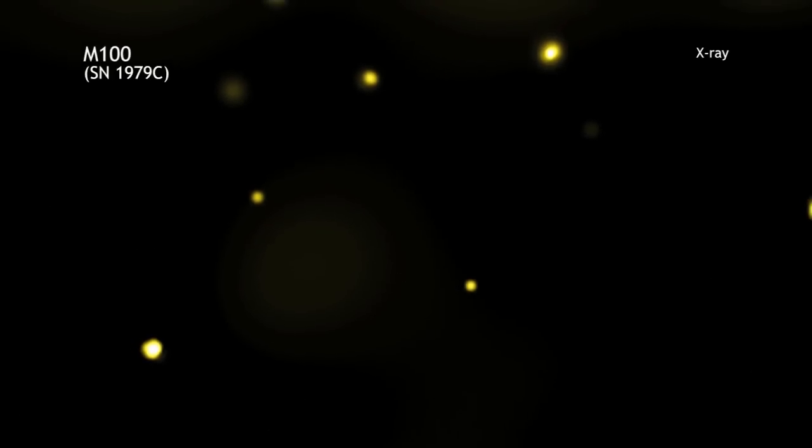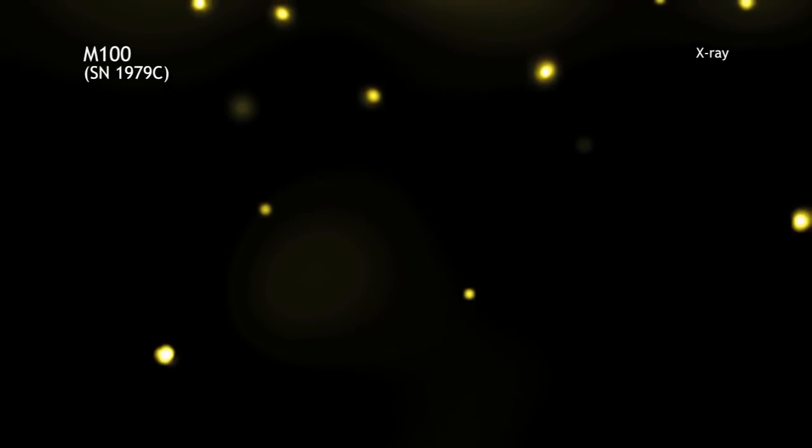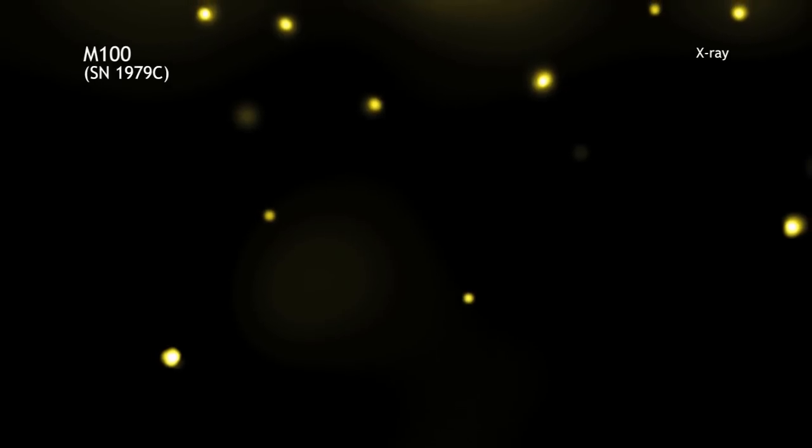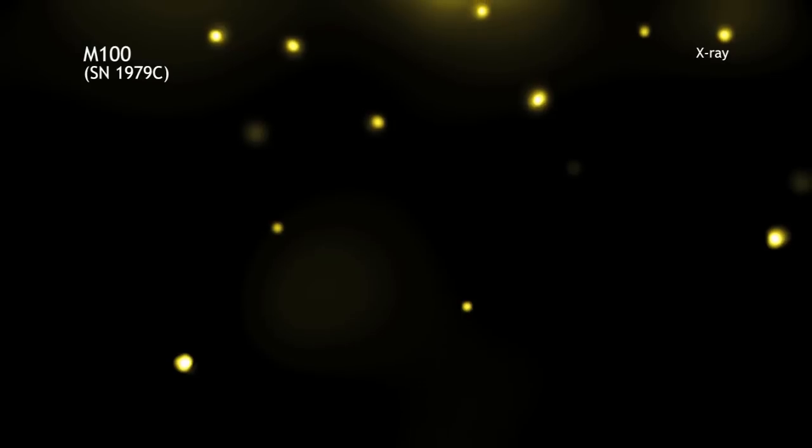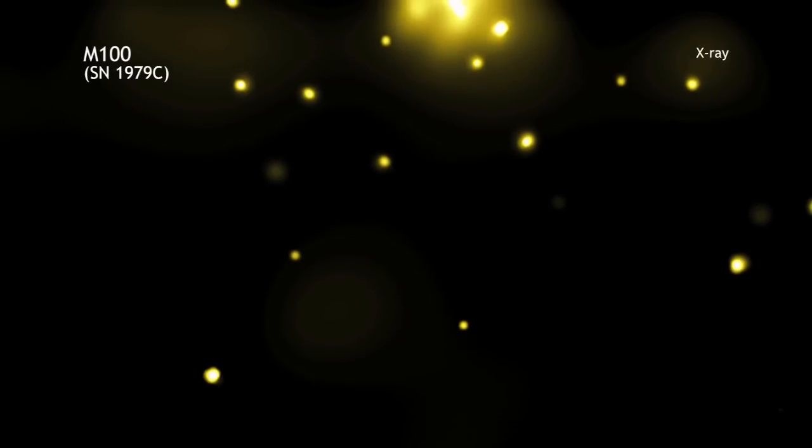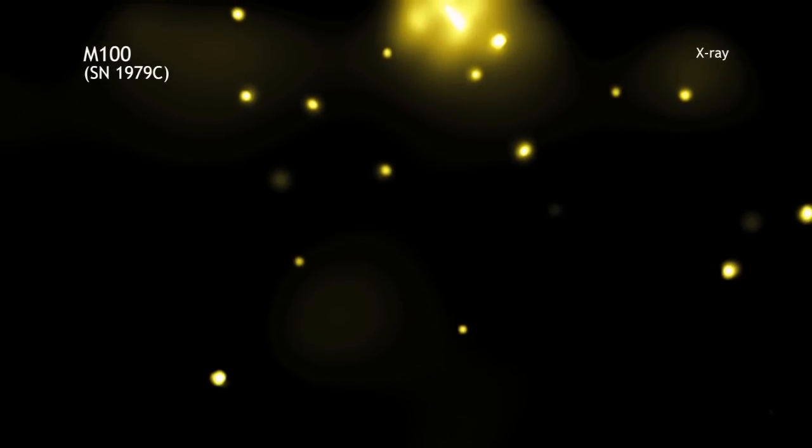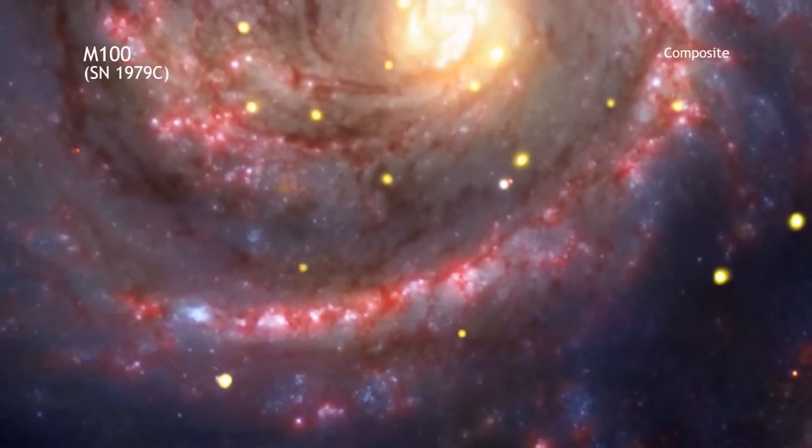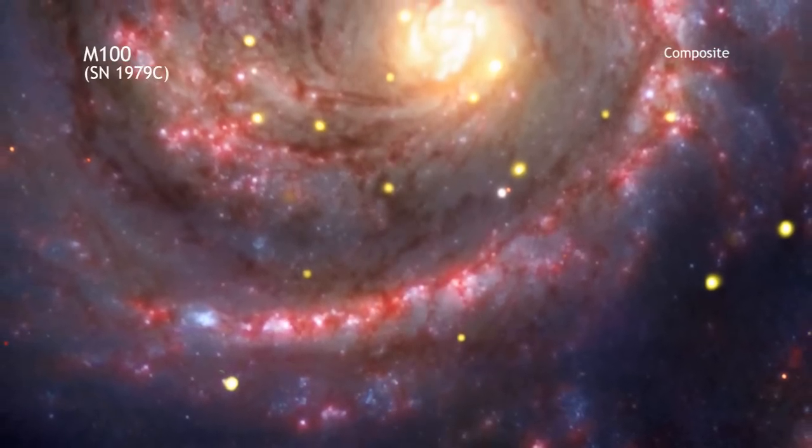Well, interestingly enough, this particular supernova is only one of three at the time which was observed when it was going off. It was discovered in 1979 by a schoolteacher, Gus Johnson, who lived in Maryland, and he was observing M100, which is something he liked to do, and what he noticed was that there was this bright star, this new bright star in the field, and it turned out that this was Supernova 1979C.